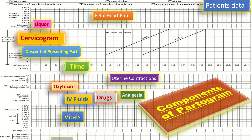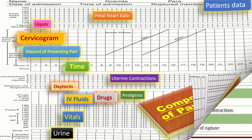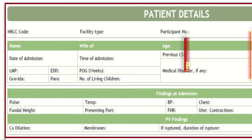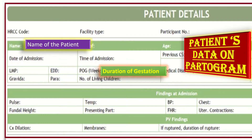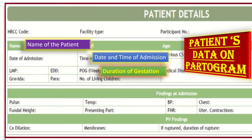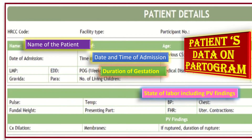The patient's data on the partogram includes the name of the patient, duration of gestation, date and time of admission, and state of labour including the PV findings, the pains, show, rupture of membranes, etc., at the time of admission.